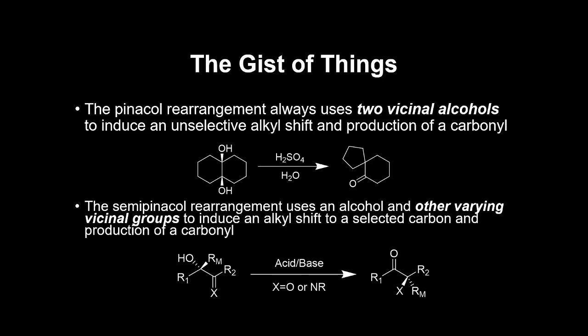In the end, while we see that these two reactions are closely related, it's clear that they are differentiated both in the structure of the molecules that undergo them as well as their scope. To recap: the classical pinacol rearrangement is undergone by a molecule containing two vicinal alcohols under acidic conditions. The reaction is generally non-selective but will produce the most substituted carbon center it can alongside a carbonyl. The semi-pinacol rearrangement uses an alcohol and a variable vicinal group to induce a more selective alkyl shift and carbonyl production under a variety of conditions. The conditions of this rearrangement can be tweaked in order to give a desired structural outcome, unlike the traditional pinacol rearrangement.